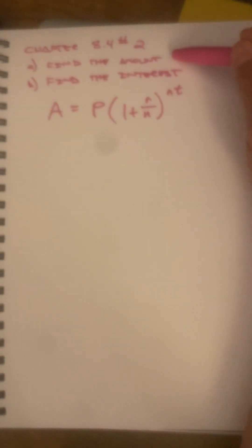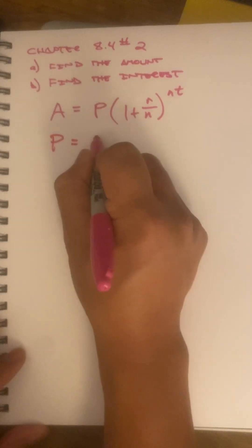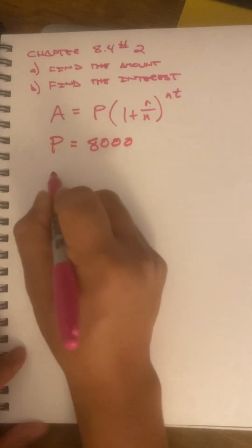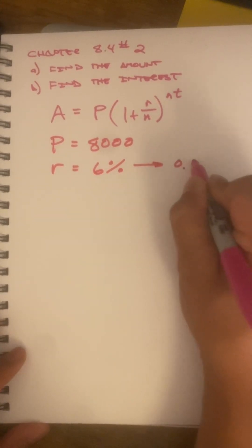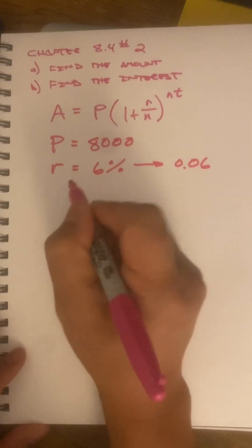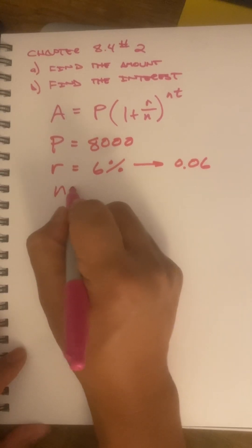So, we've got to find the amount and we've got to find the interest. Let's make sure to answer both parts. For number 2, the numbers that they give us are P equals 8,000.